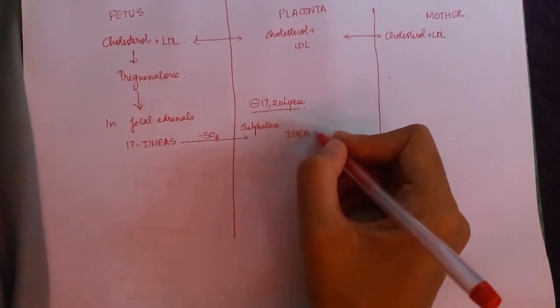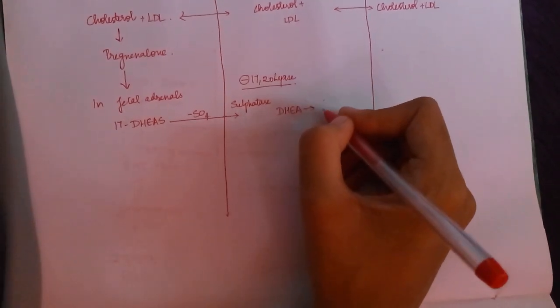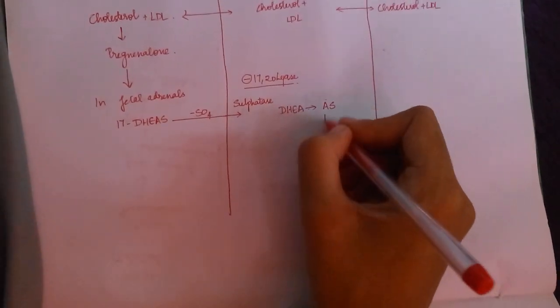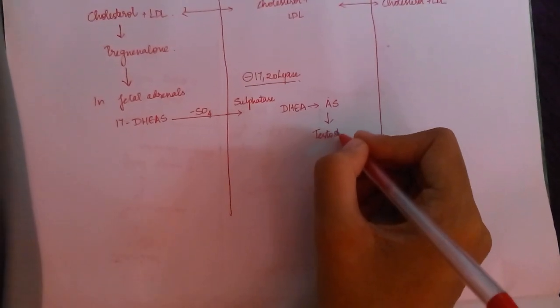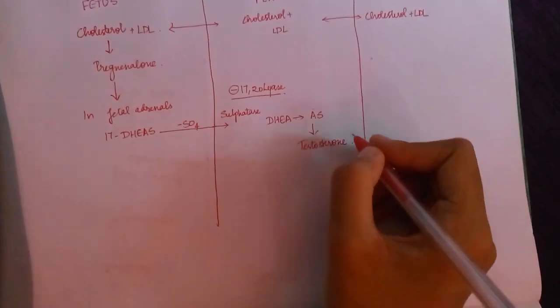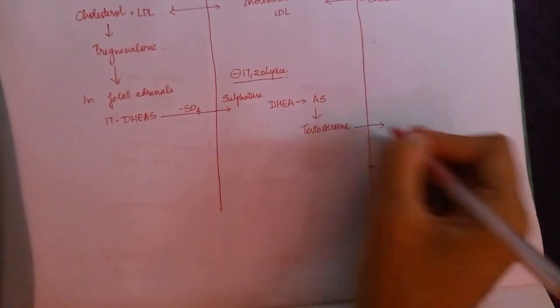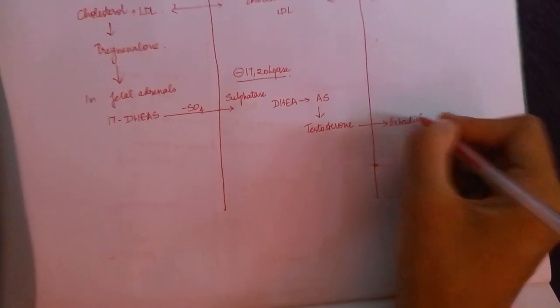This dehydroxyepiandrostenedione is converted to androstenedione, which further converts to testosterone. Testosterone is converted to estradiol, and androstenedione is converted to estrone.